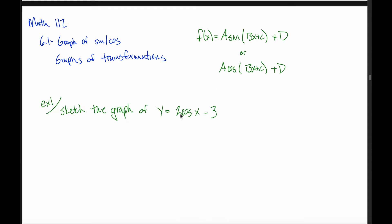Suppose you were asked to sketch the graph of y equals 2 times the cosine of x minus 3. Note that follows this format: in place of a is the number 2, and in place of d is the number negative 3. B is just 1 and c is just 0, so we can ignore those — we're not transforming the x value at all. Only a and d are relevant here.